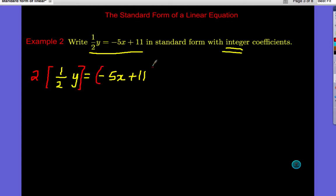We're going to use the distributive property on the right side. Two times one-half, that's just one, so you get Y equals negative 10X plus 22. So now, by multiplying by two, here's slope-intercept form, but we want Standard Form, so we've got to go one extra step.